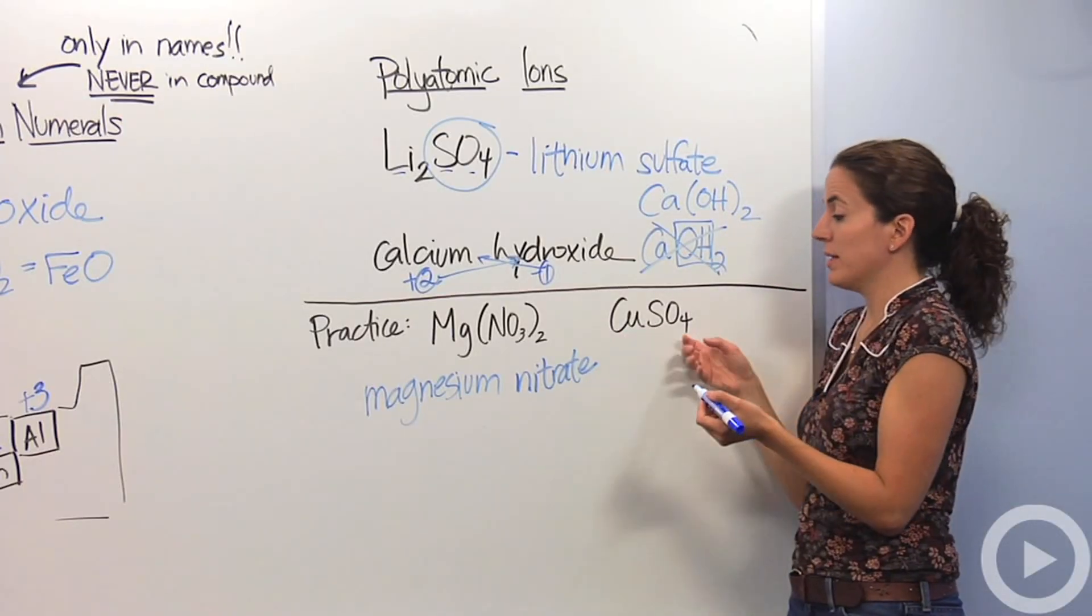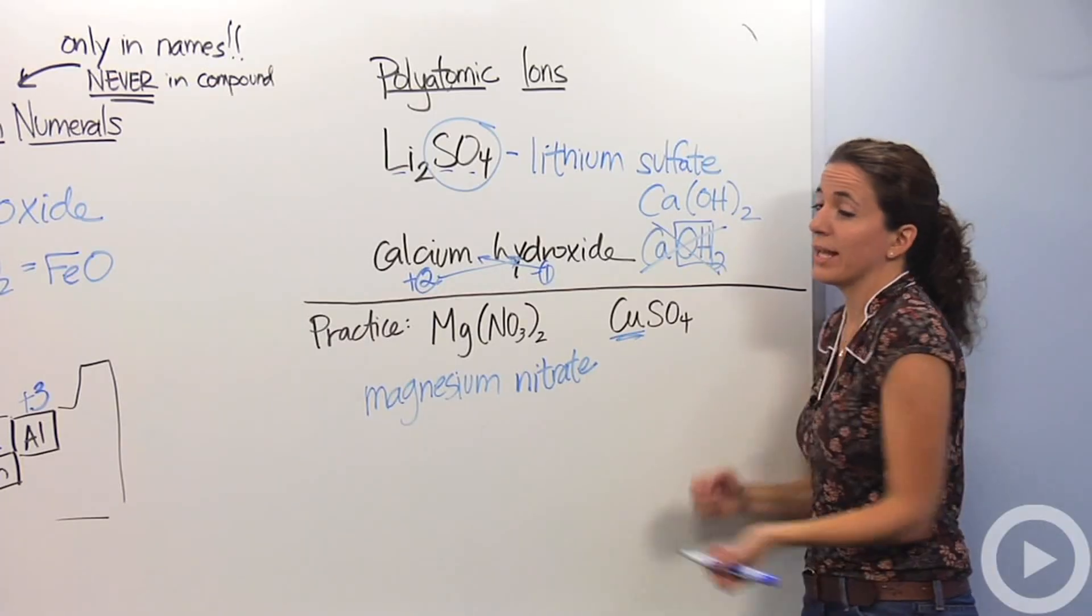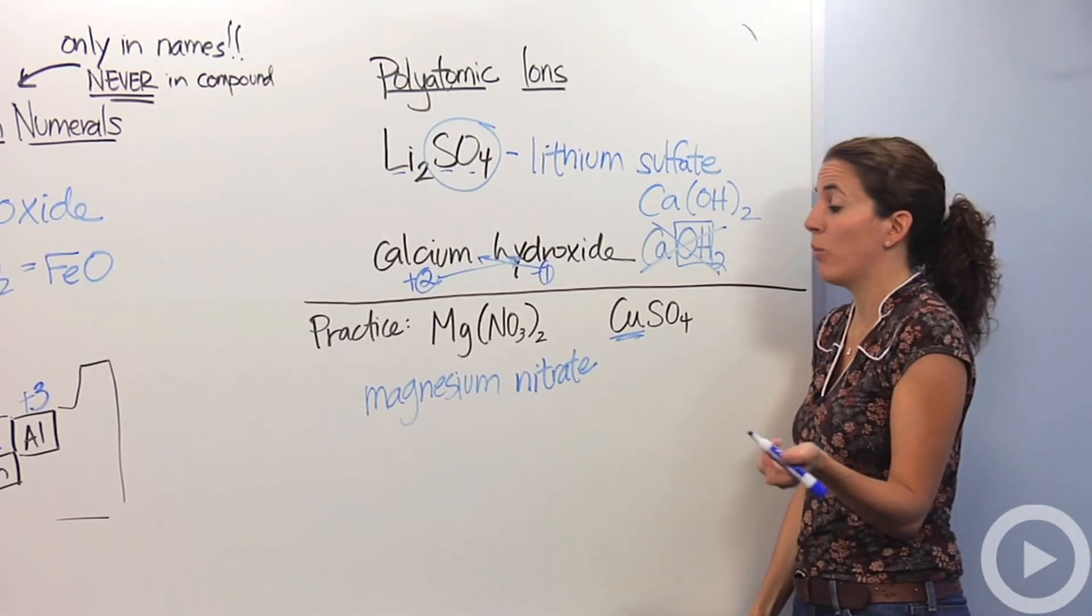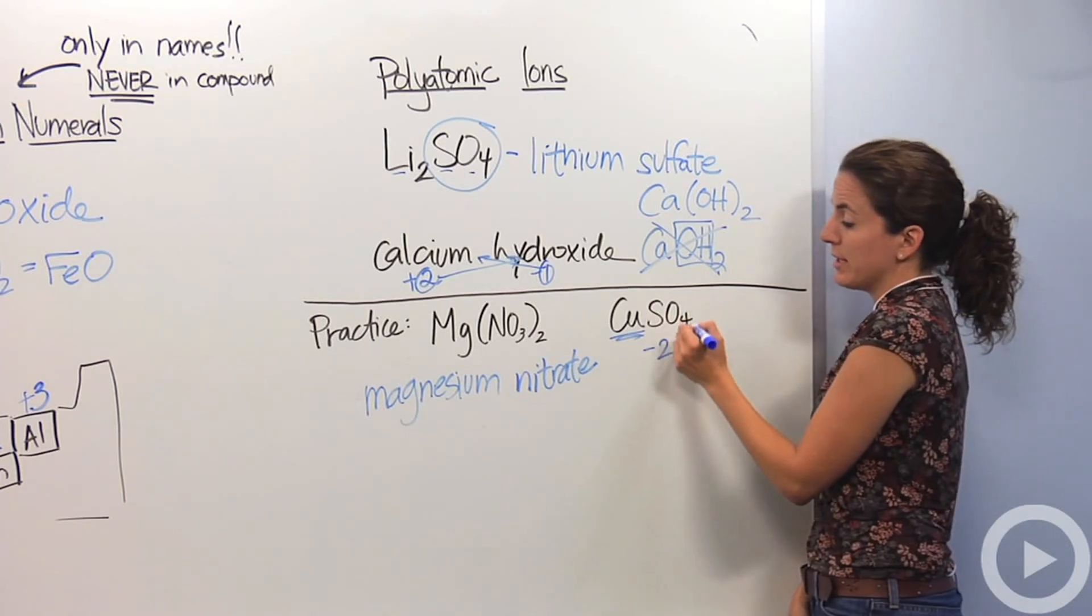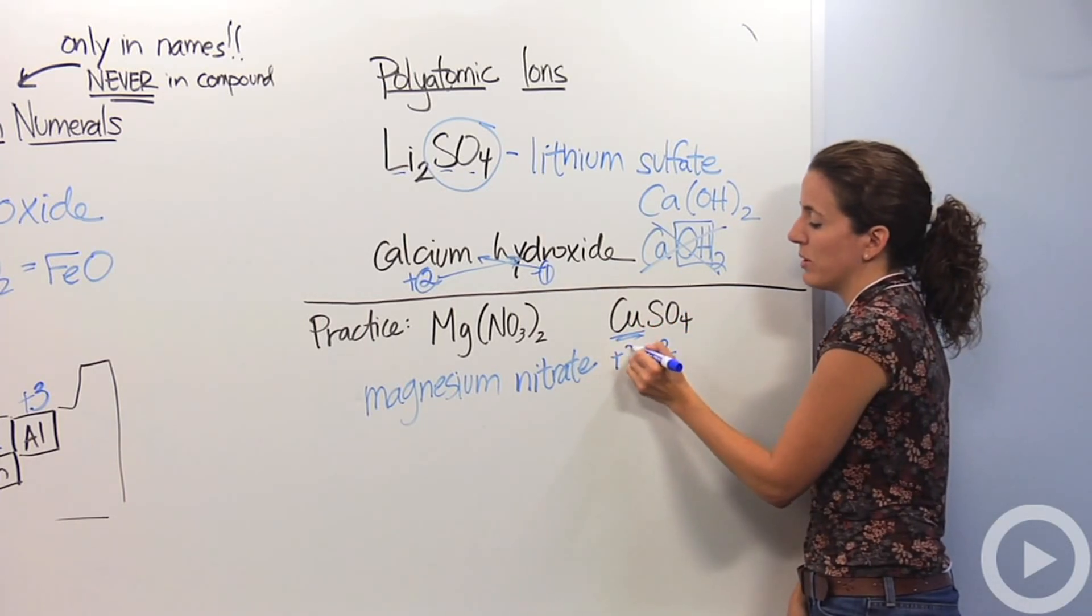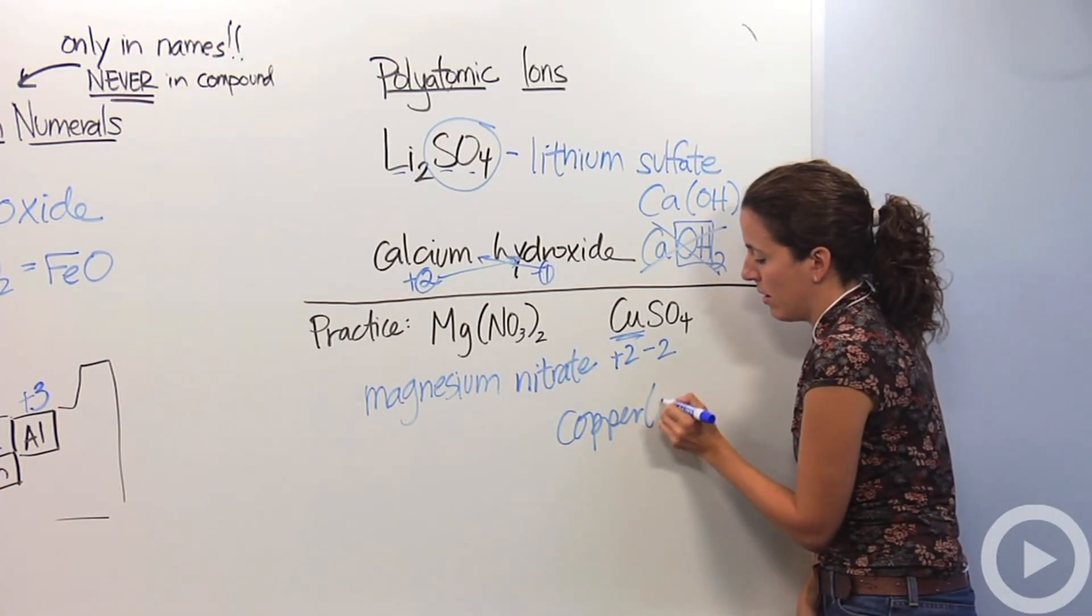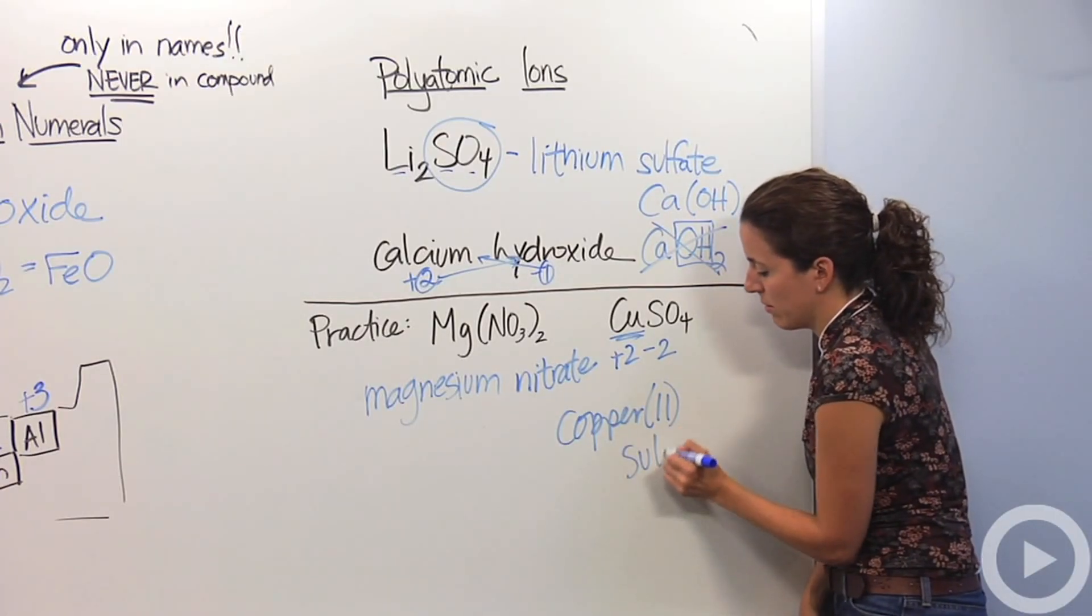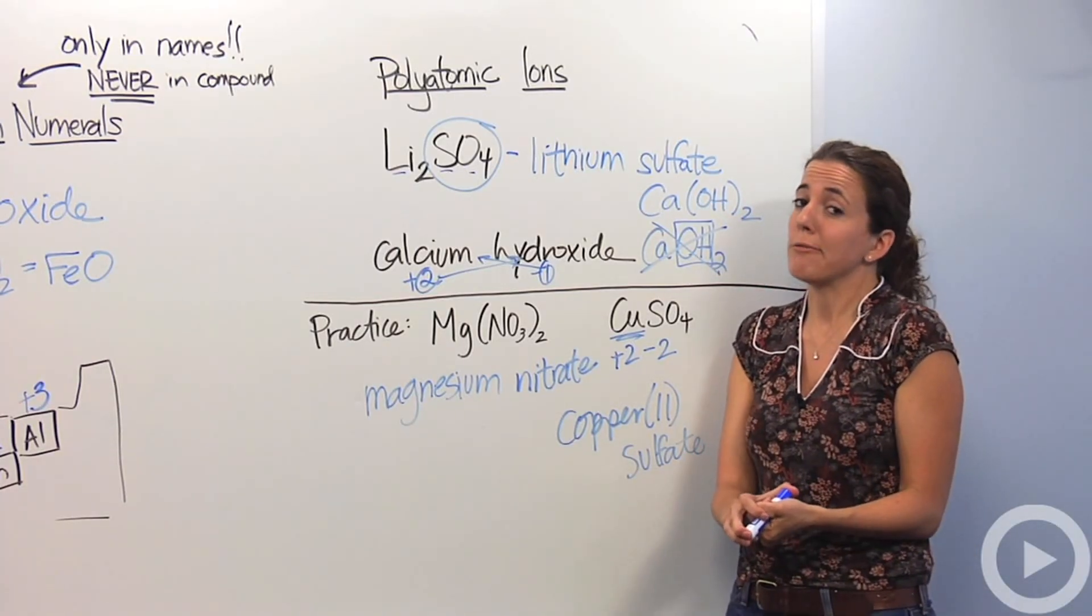This guy, now this is where you get tricky. You can't just write copper sulfate because copper, don't forget the transition metals. You have to make sure we indicate what charge it is. Sulfate is a minus 2. In this case, there's one sulfate and one copper. So this must be a plus 2 to make it equal. So it's copper(II) sulfate. There's a lot of stuff to remember for naming ionic bonds, but hopefully this helps you out.